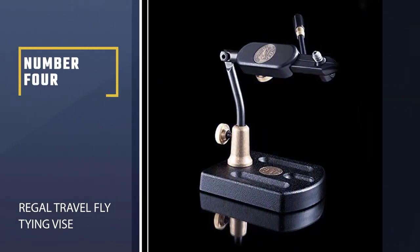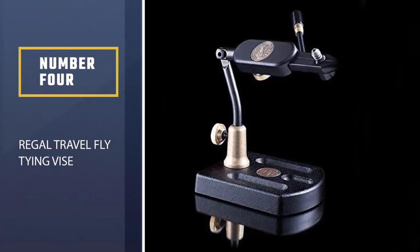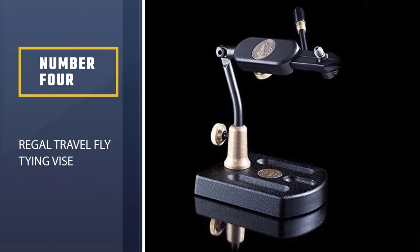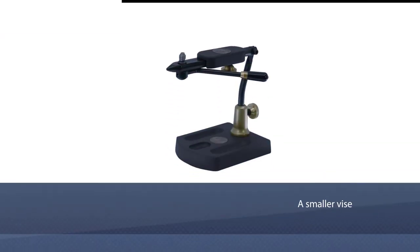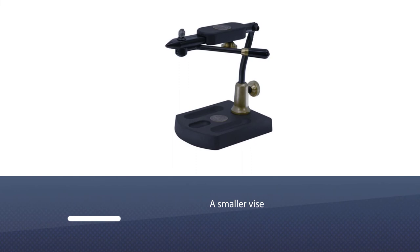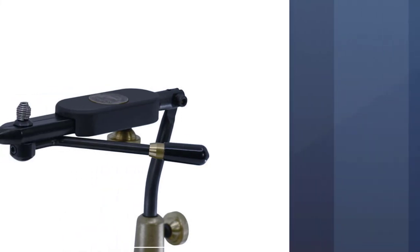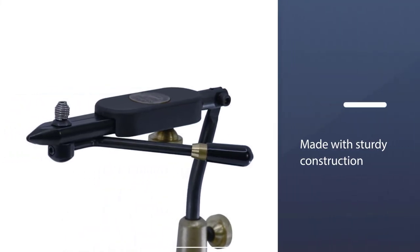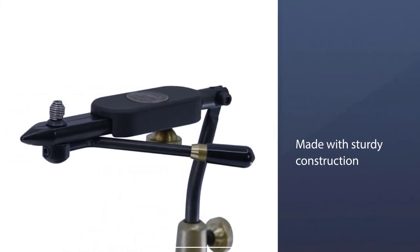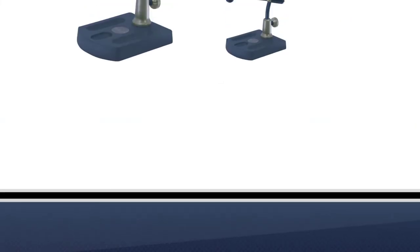Number 4, Regal Travel Fly Tying Vise. If you're looking for a smaller vise that you can take anywhere, the Regal Travel Vise fits the bill. It's compact while also being well-made with sturdy construction. This makes it perfect for taking on the road, so you can tie flies wherever you are, according to the situation. It's also lightweight for easy transport.